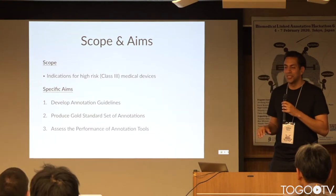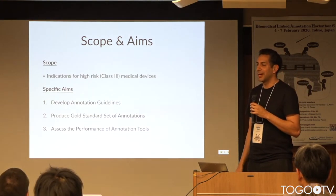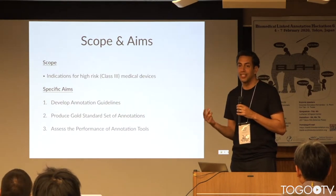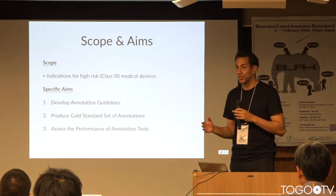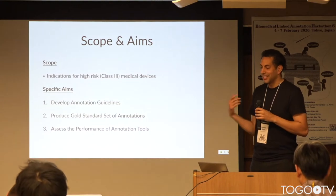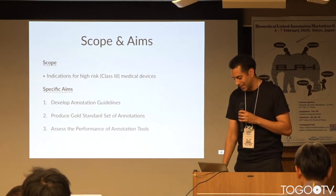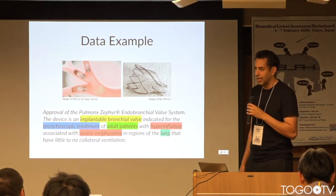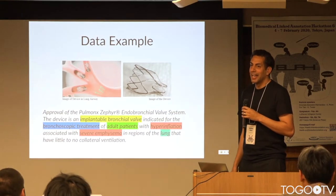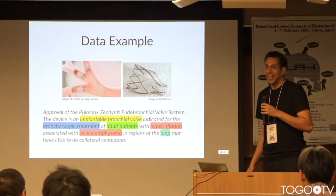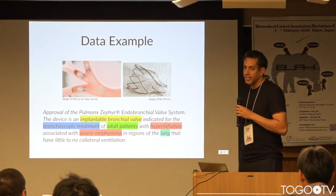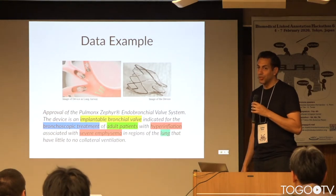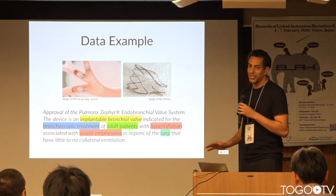I'd also like to keep the scope narrow: boil it down to high-risk, Class 3 medical devices — think life-sustaining devices and implants. The descriptions and approval statements for these are generally pretty well written, you want to get the indications right, and you probably care if somebody's using them off-label. Here's an example of what some of the data looks like — this is for an implantable bronchial valve, a Class 3 device, with highlighted text showing roughly five different entity types. It's not the easiest example, but it certainly gets harder.